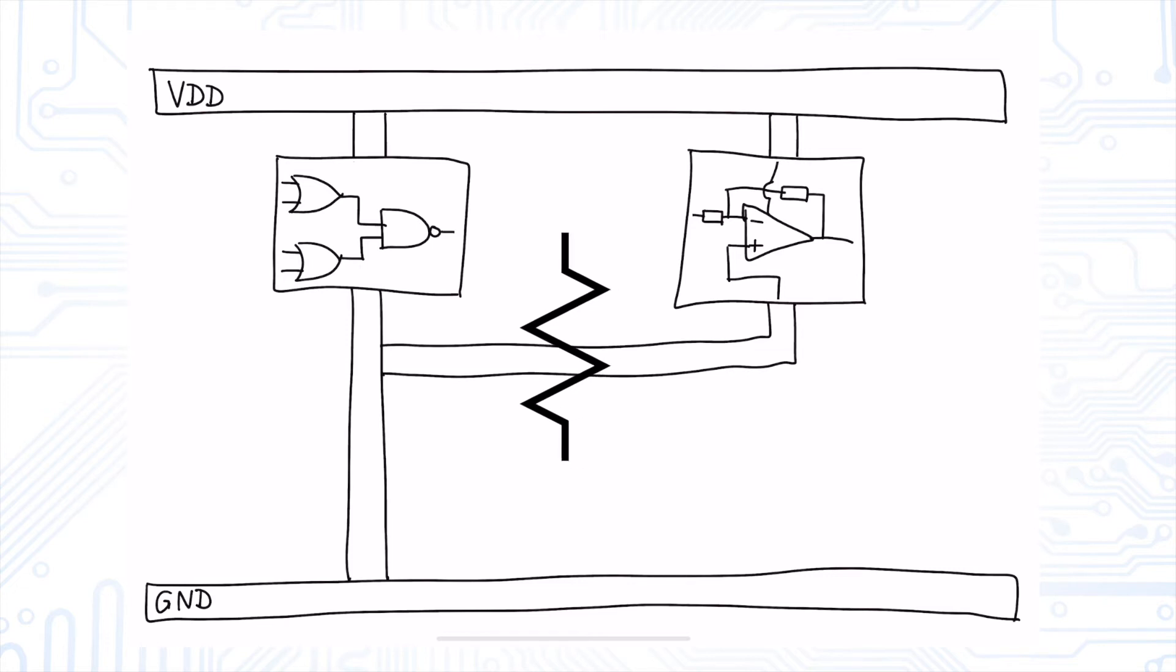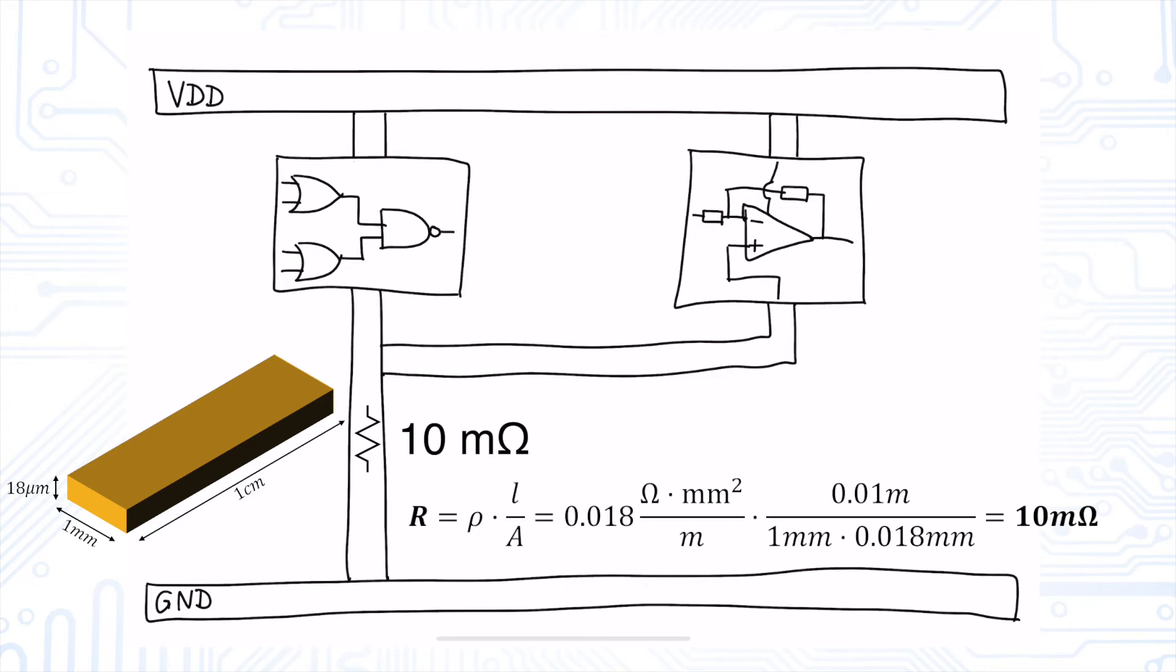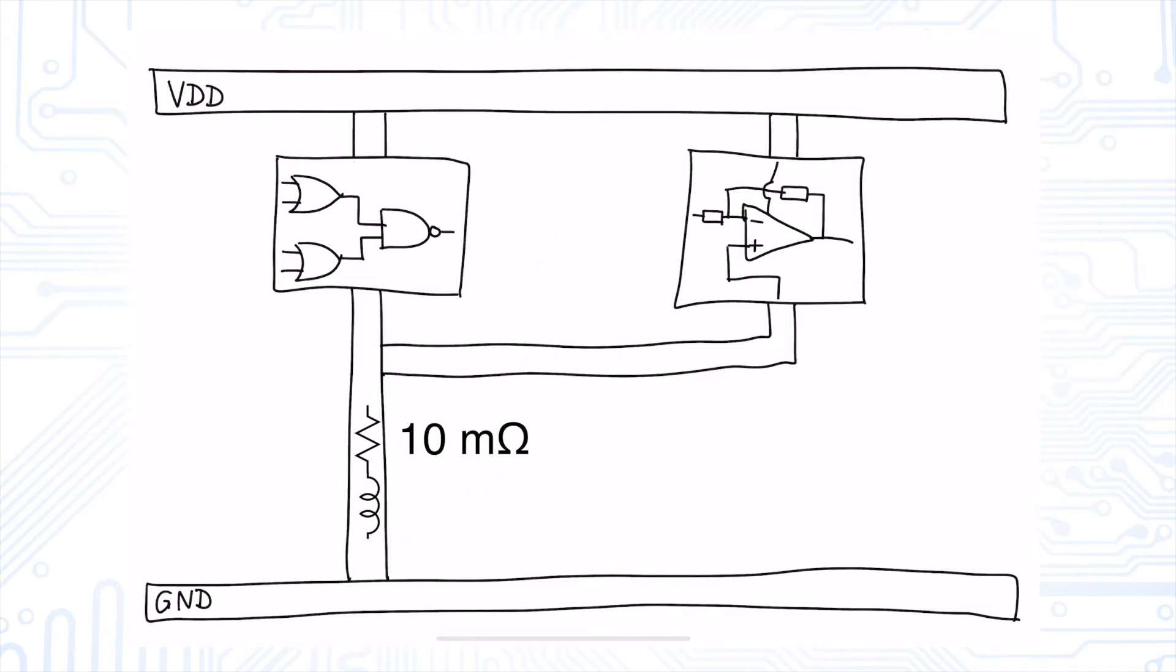The ohmic part is determined by the dimensions of the trace and the materials used. Let's say 10 milliohms for a 1cm trace length. The real troublemaker, however, is the inductive part, which is represented here as 10 nanohenry inductance.